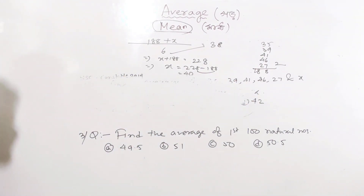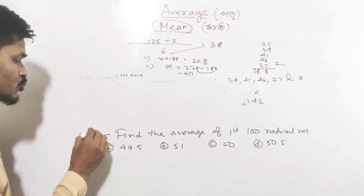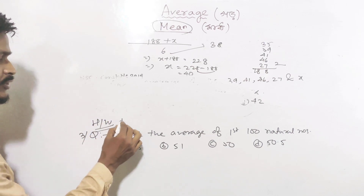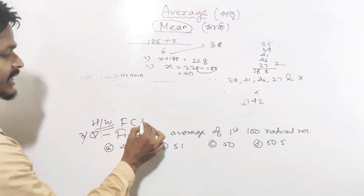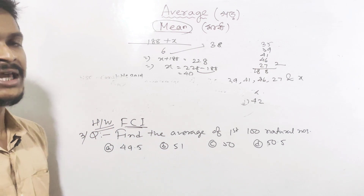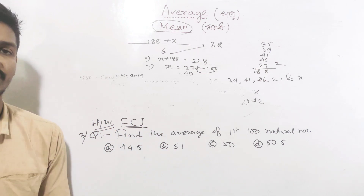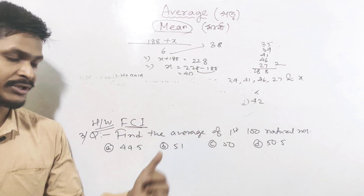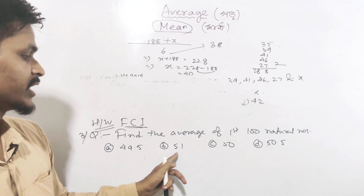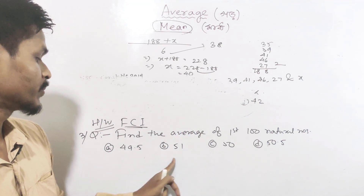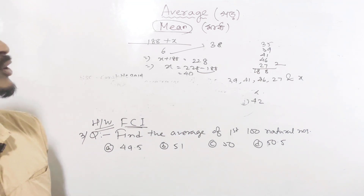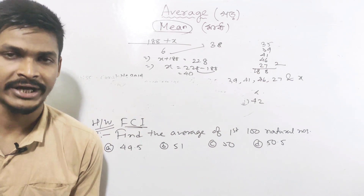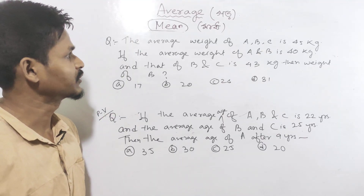Find the average of the first 100 natural numbers. This is homework. Use the same formula — first plus last divided by 2.